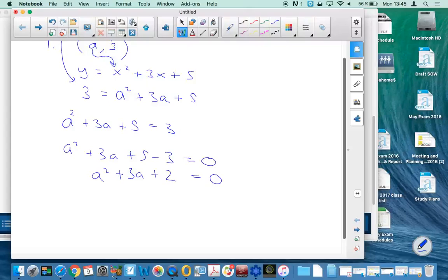Remember, when you're doing a quadratic, always see if you can factorize it first because it's the easiest method. I'm looking for two numbers that multiply to give me 2 and add to give me 3. Well, that's easy - it's 2 and 1. So that's it factorized.